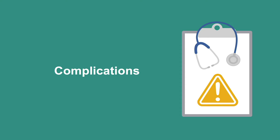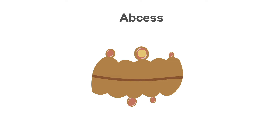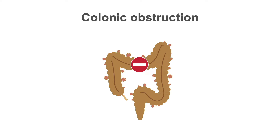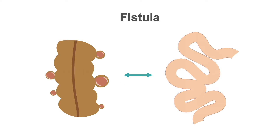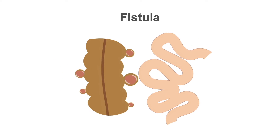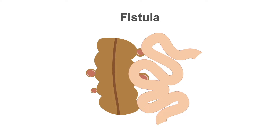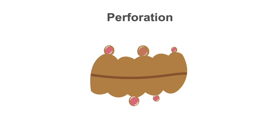Approximately 25% of patients with acute diverticulitis have associated acute or chronic complications. These include abscess formation in about 17% of patients, colonic obstruction, fistula to nearby structures such as the small bowel, and perforation which occurs in 1 to 2% of patients.